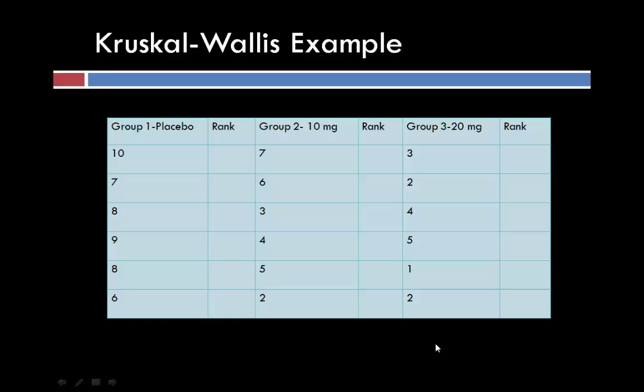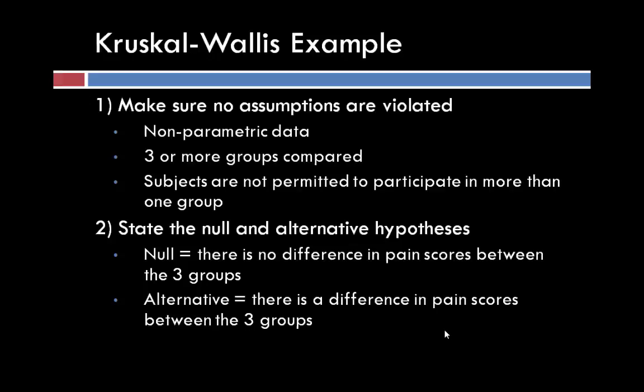We want to make sure there are no assumptions that are violated. We have nonparametric data, we have three or more groups compared, and subjects are independent, so they're not permitted to participate in more than one group. Our null hypothesis is that there is no difference in pain scores between the three groups. Our alternative hypothesis is that there is a difference in pain scores between the three groups. Our alpha is 0.05.